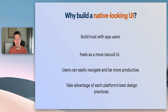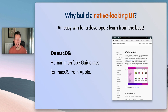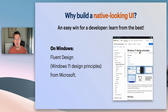Just as you might use the Material or Cupertino libraries to design an app for Android and iOS, it makes sense to adopt the corresponding design system for macOS and Windows. The design guidelines can be found in the Human Interface Guidelines for macOS from Apple, and the Fluent Design or Windows 11 design principles from Microsoft. You can check these resources to see the suggested guidelines for each system — like how a checkbox should look or how to handle opacity or animations.